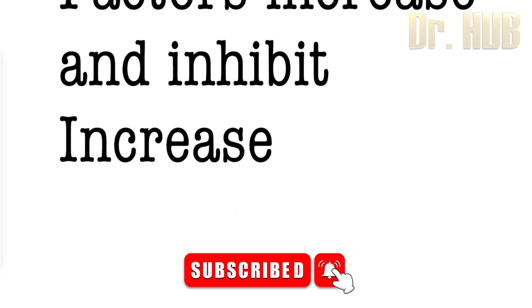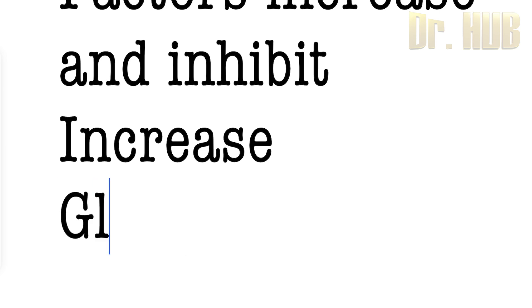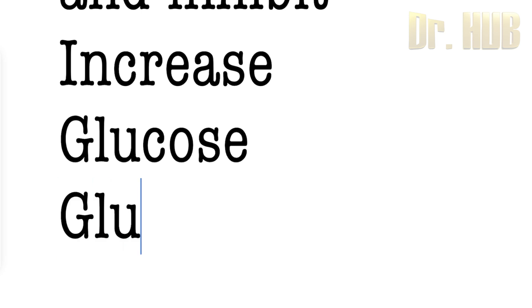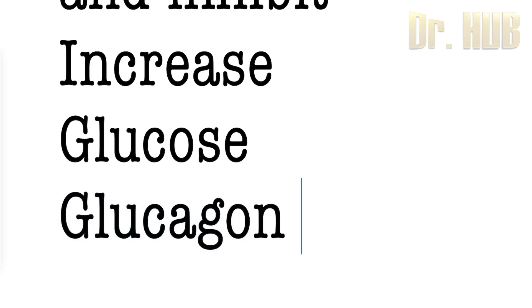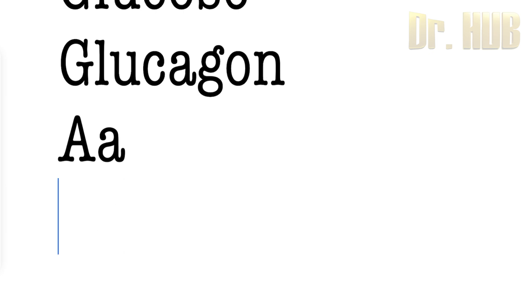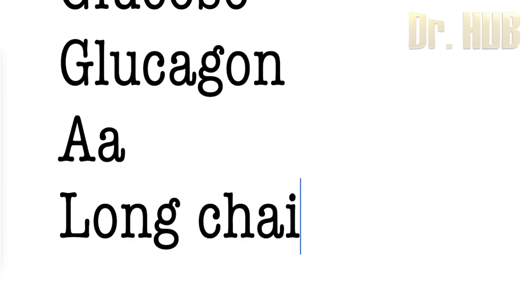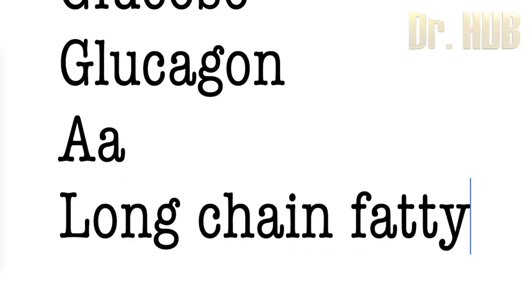Glucose increases the insulin secretion — that is the most potent factor — and also glucagon. Then come amino acids and also the long chain fatty acids.